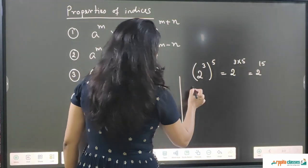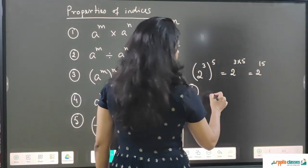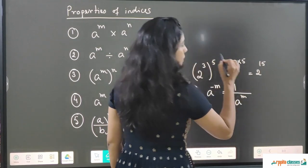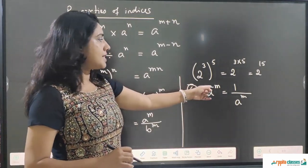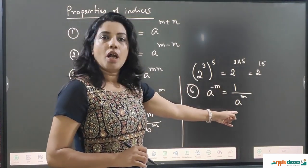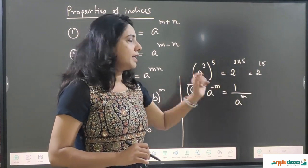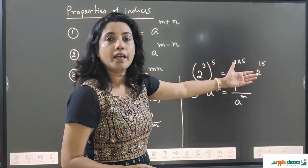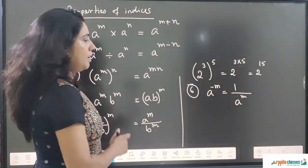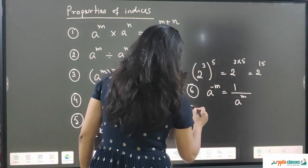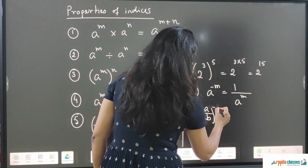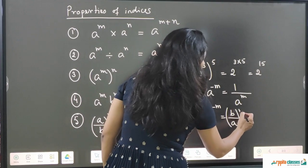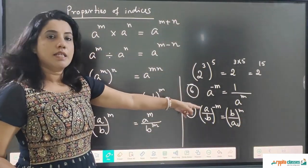The sixth property is: if it is a to the power minus m, then we can write it as 1 upon a to the power m. If the power is negative, we can take it to the denominator and the power becomes positive — or vice versa. Also, if it is (a/b) to the power minus m, we can write it as (b/a) to the power m.